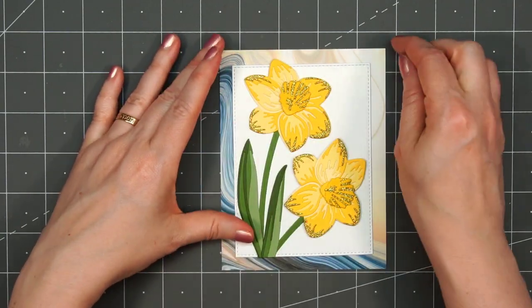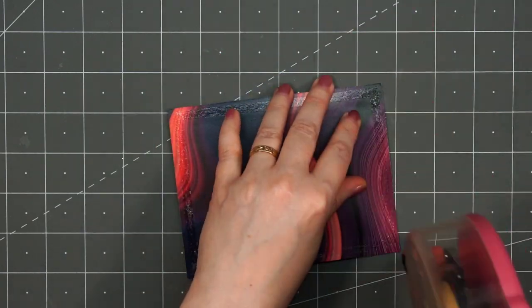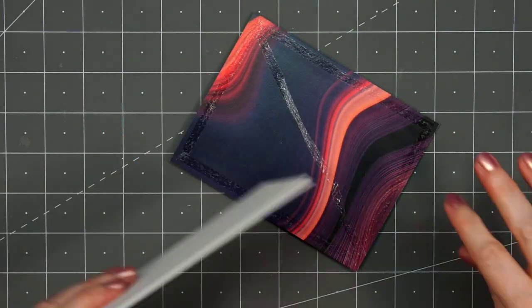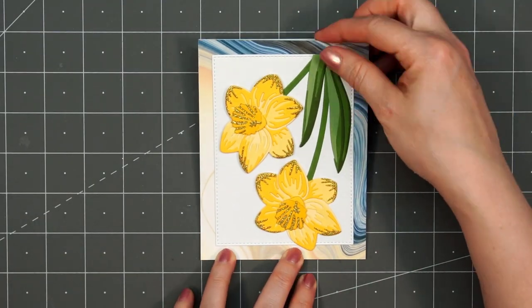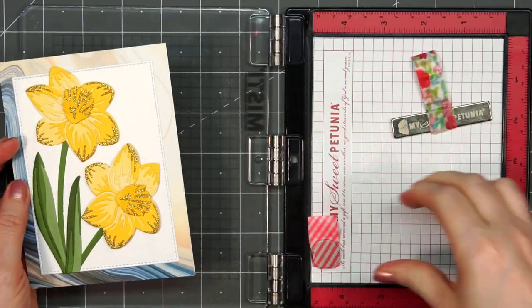I'm not doing any cardstock layers this time. I decided just to have that pattern paper go all the way to the edge. I'll put my card front onto a card base. Did you see that gorgeous pattern on the back of this pattern paper? So many beautiful designs.